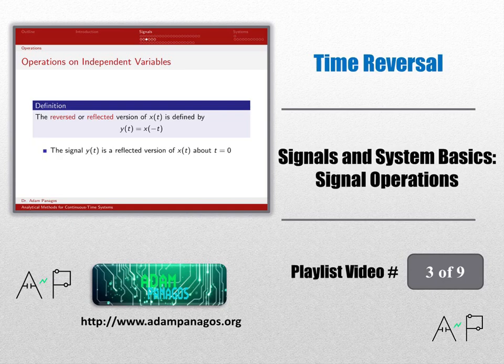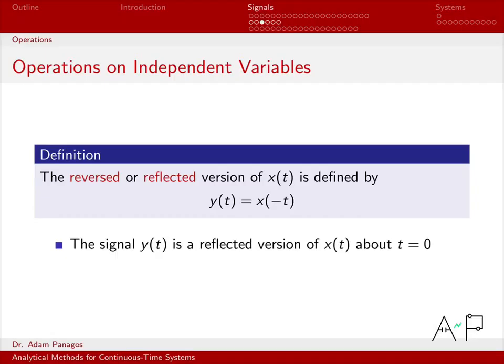The next operation we want to look at is the time reversal operation. We can talk about time reversing x of t, sometimes calling it reflecting about the t equals 0 axis. All we do is replace t with negative t. So if I have a signal x of t and I want to create a new signal y of t, graphically what happens is you're basically flipping the original signal about the t equals 0 axis. Everything that was at positive time is now at negative time, and everything at negative time is now at positive time. We'll do some examples so we can visualize that and also do it algebraically, like we did in the last video.